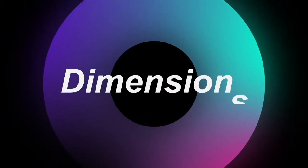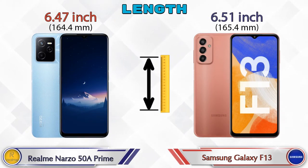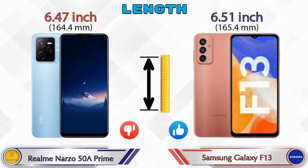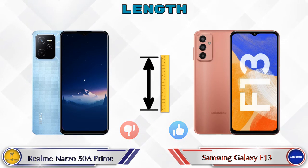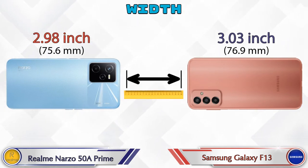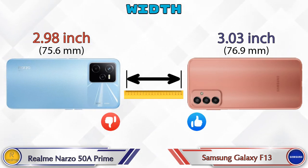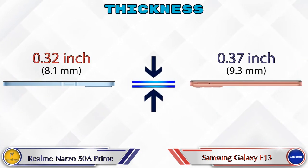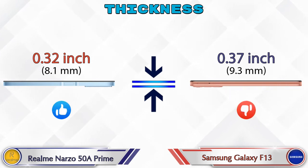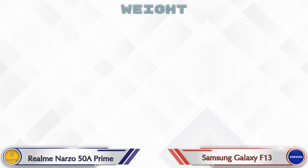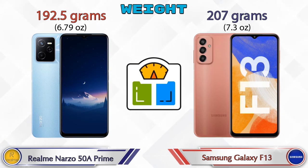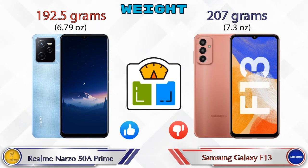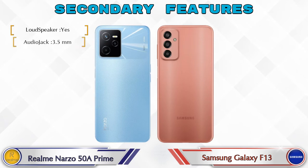Now let's check the dimensions. The length of the 50A Prime is 6.47 inches and the Galaxy F13 is 6.51 inches. Width: 50A Prime is 2.98 inches and Galaxy F13 is 3.03 inches. Thickness: 50A Prime is 0.32 inches and Galaxy F13 is 0.37 inches, which is bigger than the 50A Prime. Weight: the 50A Prime is 192.5 grams and the Galaxy F13 is 207 grams, which is heavier than the 50A Prime.